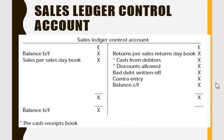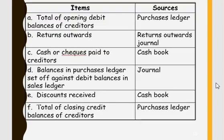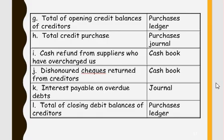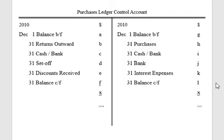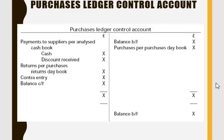This is the normal pattern of your sales ledger control account. The next topic is the purchases ledger control account, which is also known as the total creditors account. These are the sources to prepare the purchases ledger control account. Here is the template for how we prepare it. Finally we refer to the purchases ledger. The normal balance for the purchases ledger control account is on the credit side.